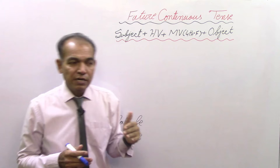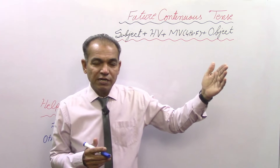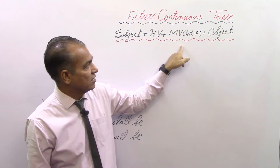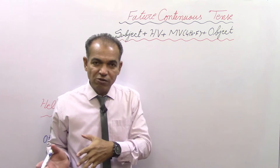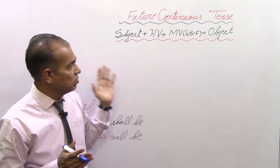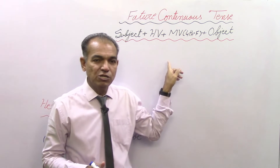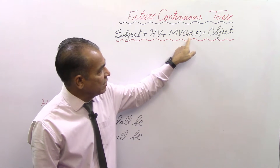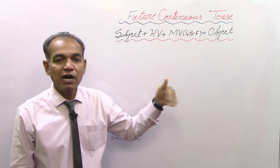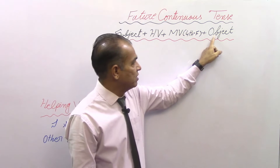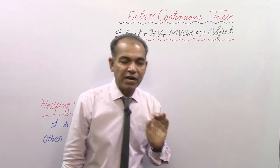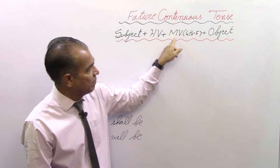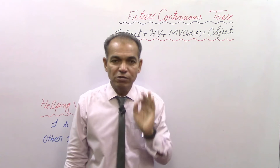When we are talking about an ongoing action in future, we will use the formula of future continuous tense. This is the universal formula I've mentioned in previous videos: Subject, Helping Verb, Main Verb, and Object. The form will keep changing according to the sentence, but subject, helping verb, main verb, and object remain the components.